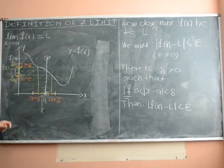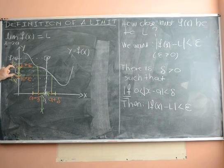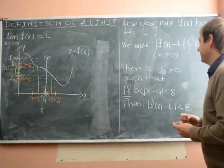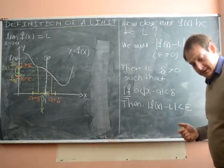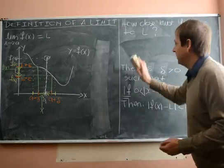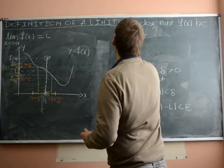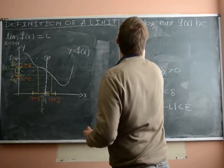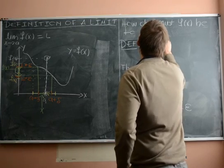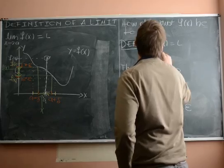Now remember, we have to be able to do this for any epsilon. Remember, we have to be able to do this no matter how close we want f(x) to be to L. So that means that we now formulate the definition to say the following: we say that the limit of f(x) is L as x approaches a if...